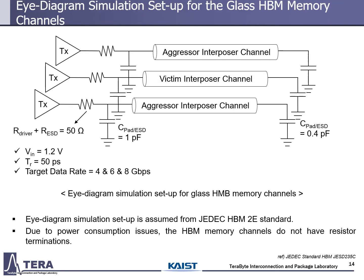This slide shows the eye diagram simulation setup for the HBM interposer channel. In the simulations, 50 Ω and 1 pF were assumed for the transceiver, and 0.4 pF was assumed for the receiver load. We also assume there are two aggressor channels and one victim channel. Based on current HBM technology, the target data rate of next-generation HBM is over 4 Gbps.